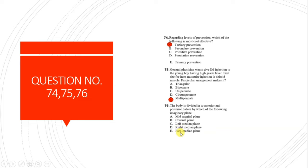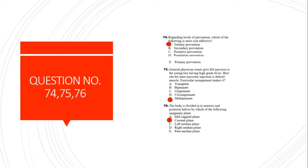Question 76: The body is divided into anterior and posterior halves by which imaginary plane? The coronal plane divides the body into anterior and posterior halves.